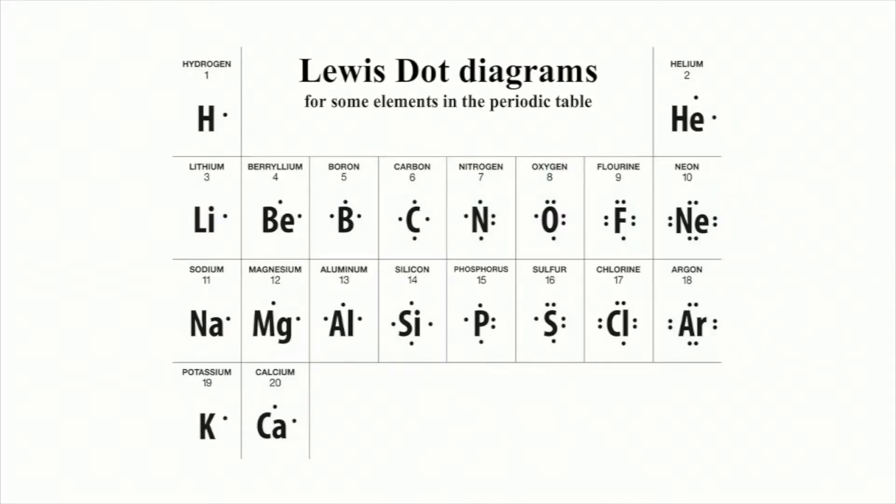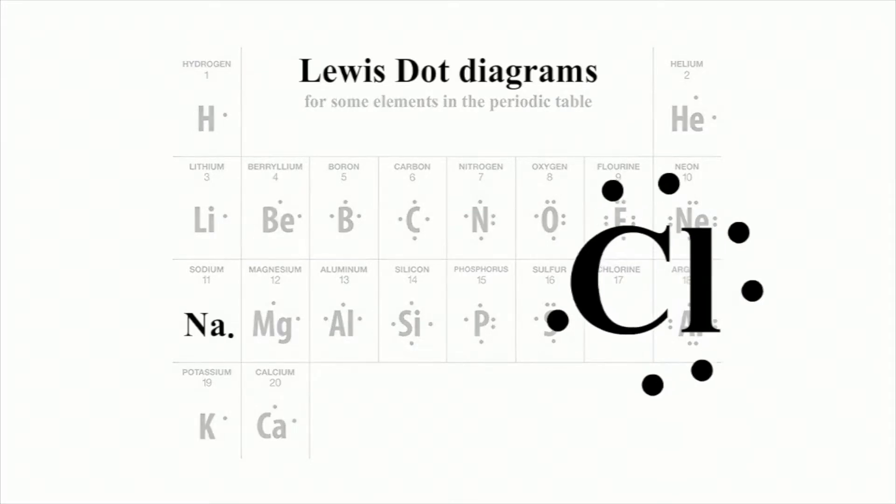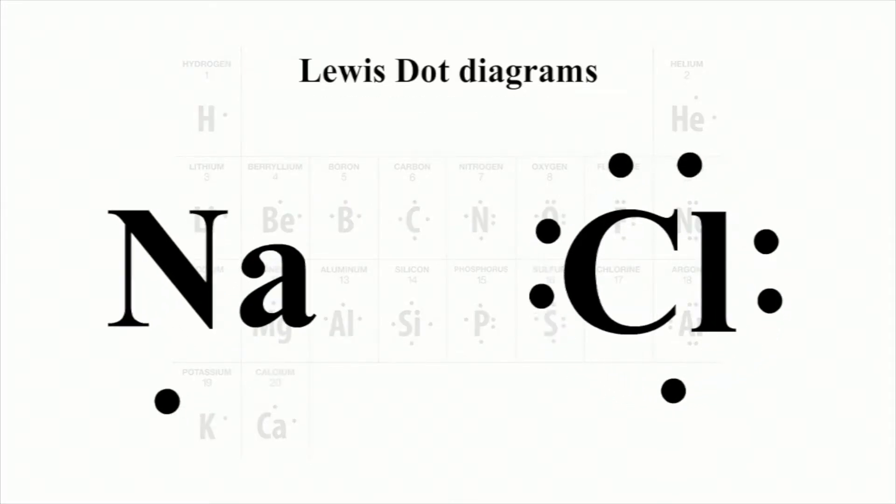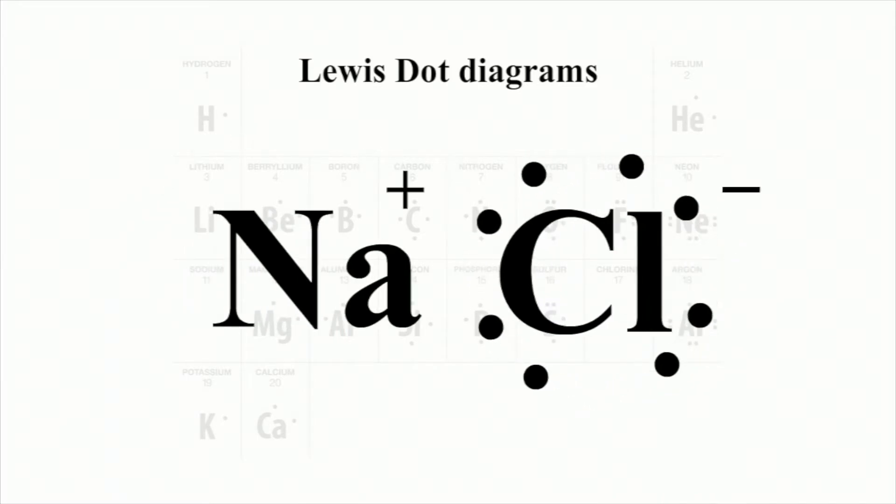Lewis dot diagrams are another visually useful way to understand the octet rule. Sodium has one electron in its outer shell, represented here by a dot. The seven dots around chlorine represent its seven valence electrons, with one spot to fill to have a full outer shell. When sodium and chlorine combine, the atoms become stable and also have a charge.